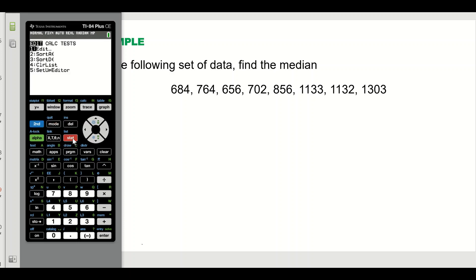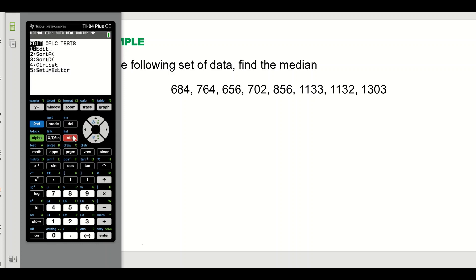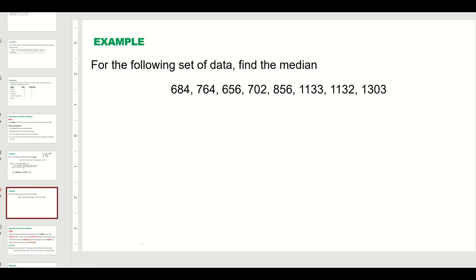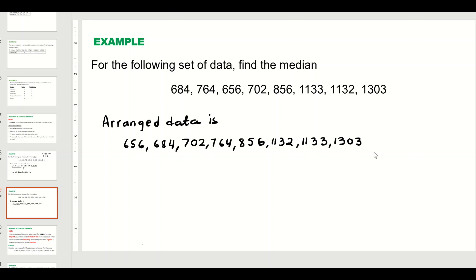Come back to the main screen, go to STAT again, and select number two to sort the data in ascending order. Since the data is in List 1, press Second and one to get L1, close the parenthesis, and hit Enter. It says Done, meaning the data is now arranged in ascending order in List 1. Going back confirms the data is sorted.